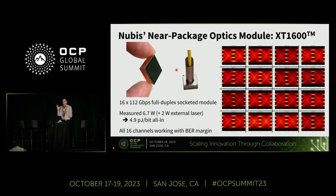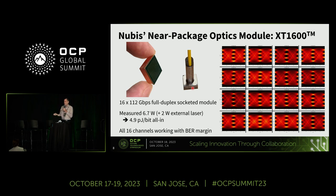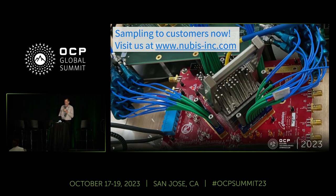Those are typical eye diagrams. The chiplet, when packaged into a near-package optics module, consumes about 4.9 picojoules per bit all-in including the laser. This is a 1.6 terabit near-package optics module — very small. You place it next to your ML/AI ASIC, tile it in multiple rings around the ASIC, and achieve terabits per second per millimeter of escape bandwidth. We are sampling this to customers now. Consistent feedback is that it comes up and all 16 channels work — apparently not typical in the industry. If you want to test it, come see us and we'll be happy to sample it to you.